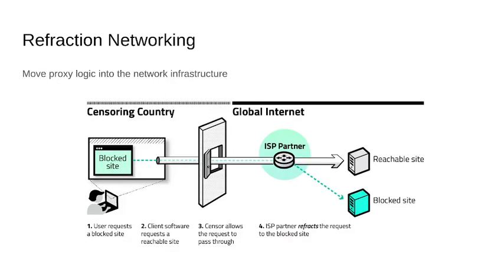Refraction Networking is a non-traditional proxy, meaning it functions in a different way than a typical proxy. A typical proxy has a server and a client — the client connects to the server and the server forwards traffic on the client's behalf, and that server is just an endpoint on the internet. Refraction Networking takes a similar model and moves the proxy logic into the middle of the network, to a partner or participating internet service provider router.